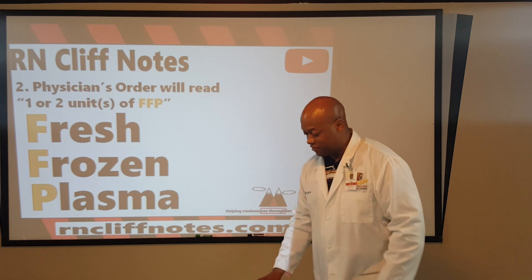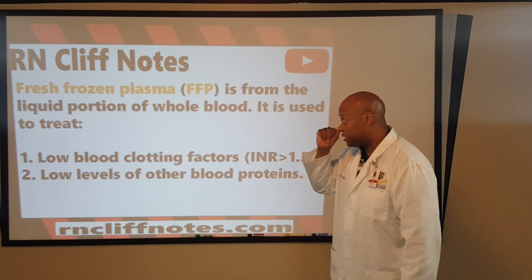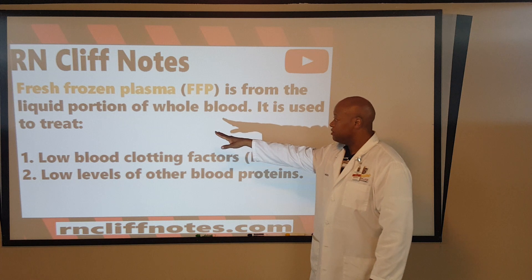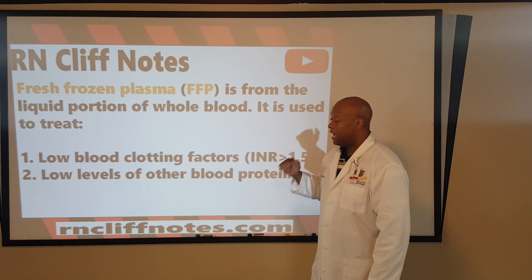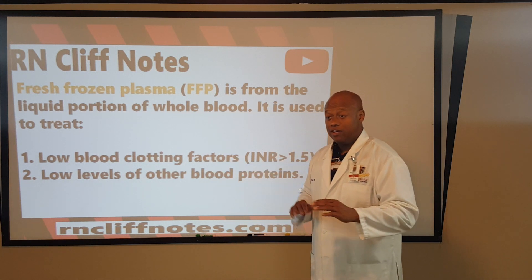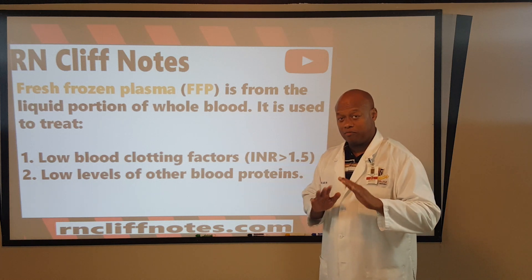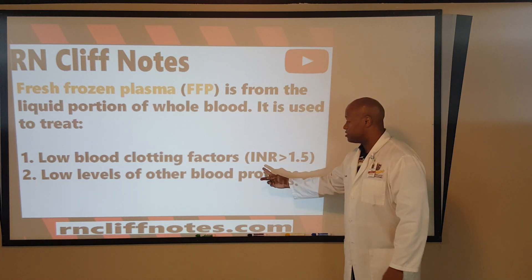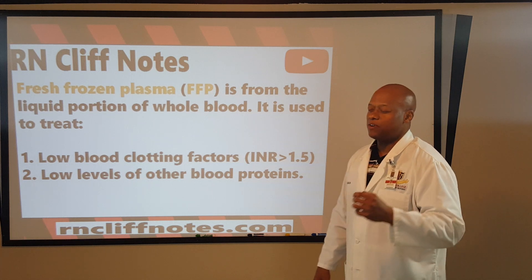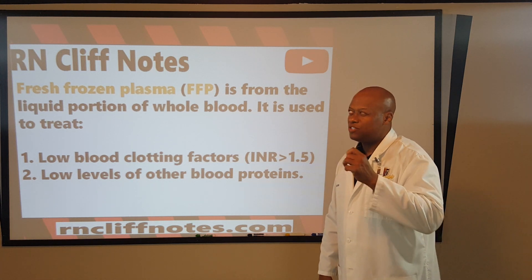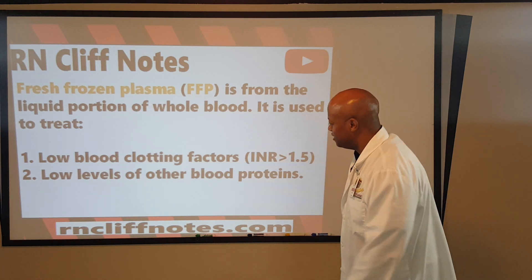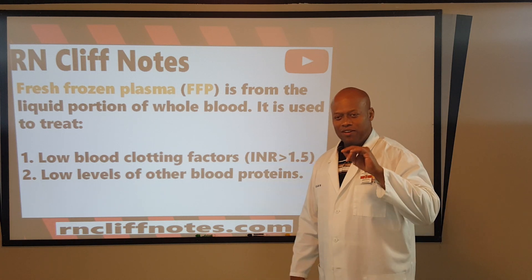So we're talking about fresh frozen plasma — just a little bit of insight. It is the liquid portion of whole blood, and it is used to treat low blood clotting factors. It turns out your blood clotting factors can be found in the more liquid portion, particularly when a person's INR is greater than 1.5. What should that INR be? Under normal circumstances, it should be less than 1. If they're under therapy — heparinized, on Coumadin therapy, or warfarinized — it should be 2 to 3.